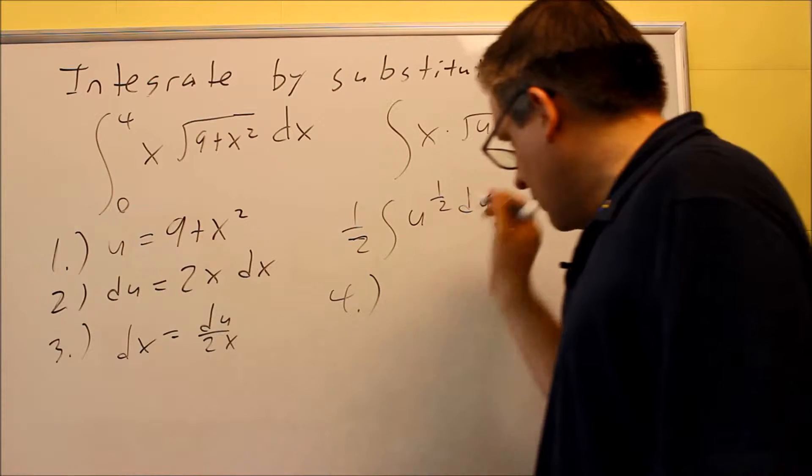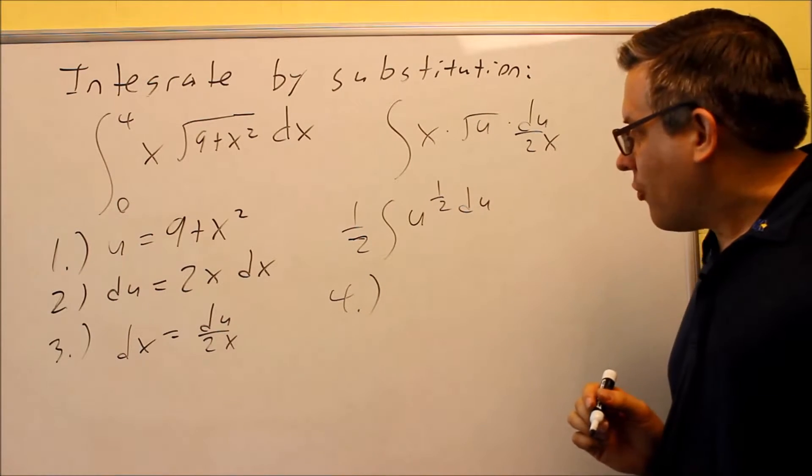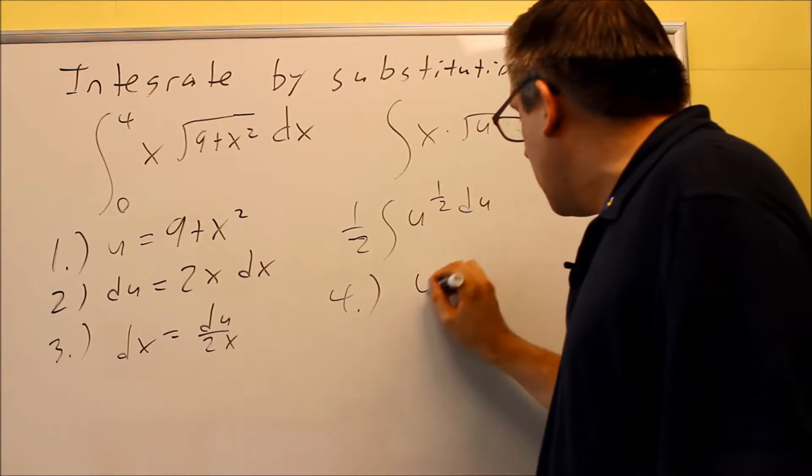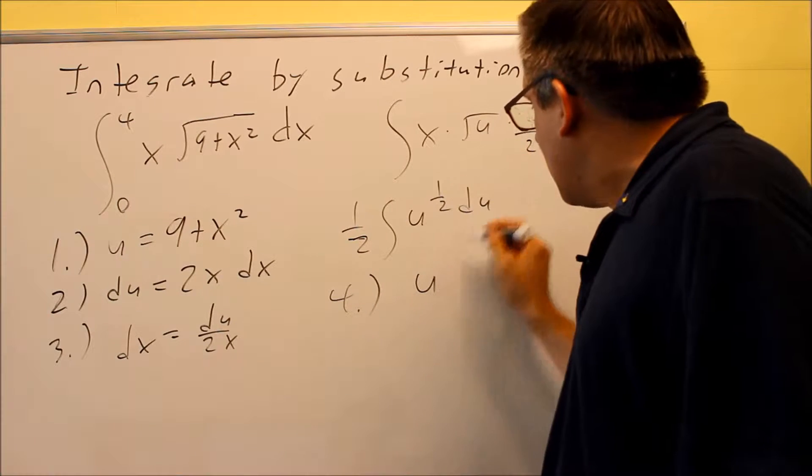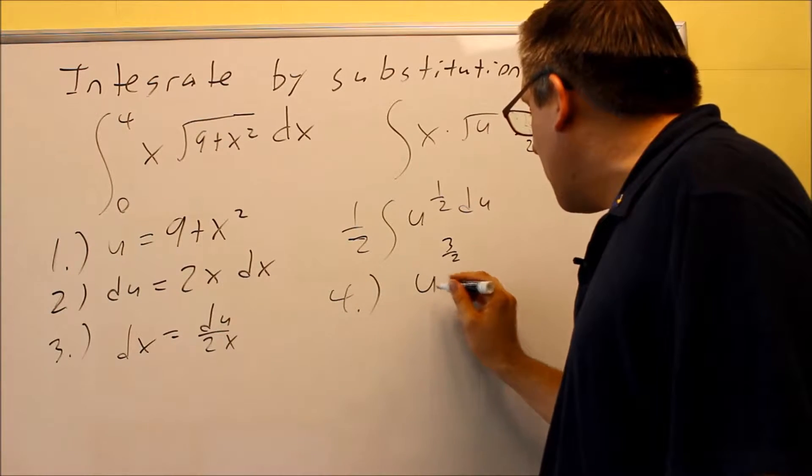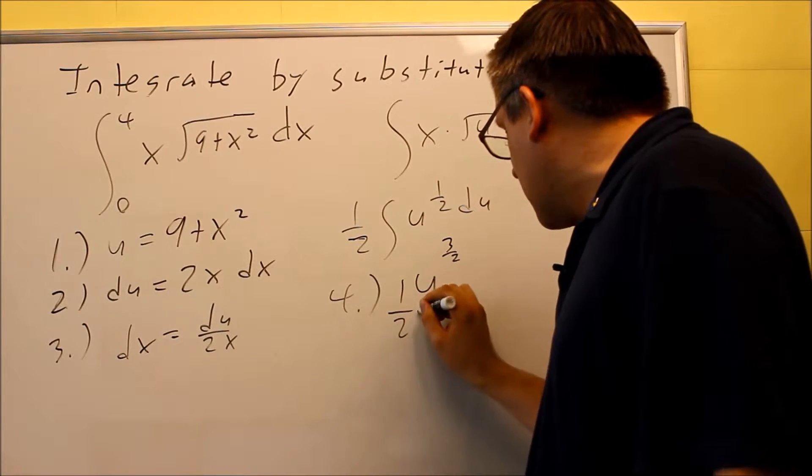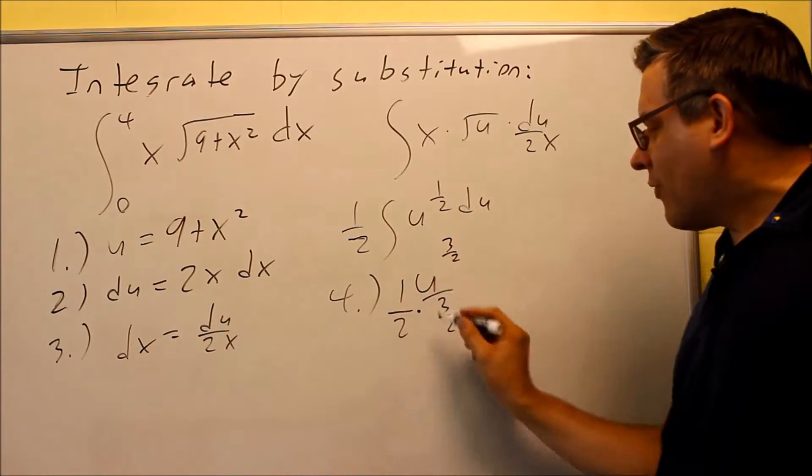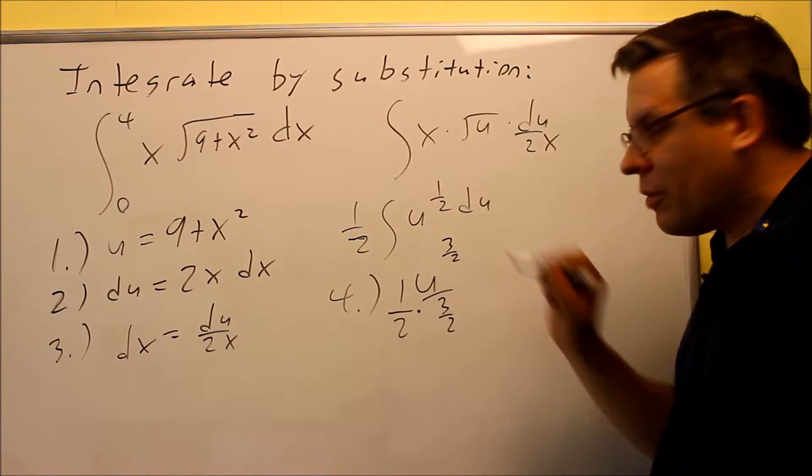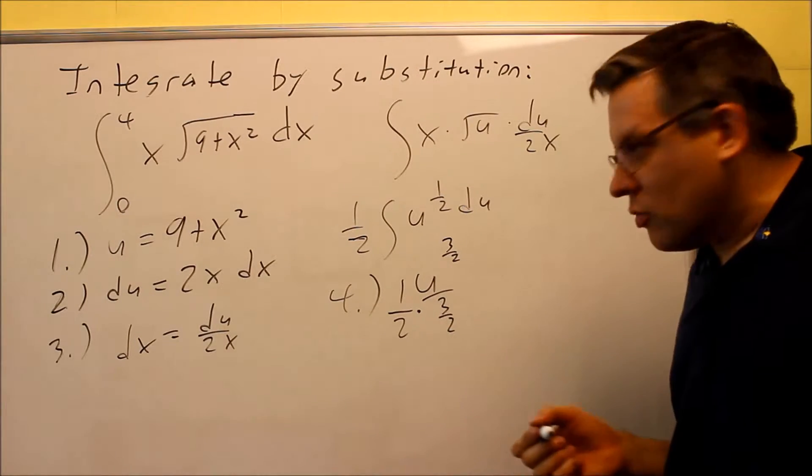We're ready to integrate this for step number four. So step four, we raise the power by one, so that's three halves divided by the new power, and don't forget about the constant that you have out front. So there's a one half that you can just bring down, and then we integrated the part on the inside using inverse power rule.